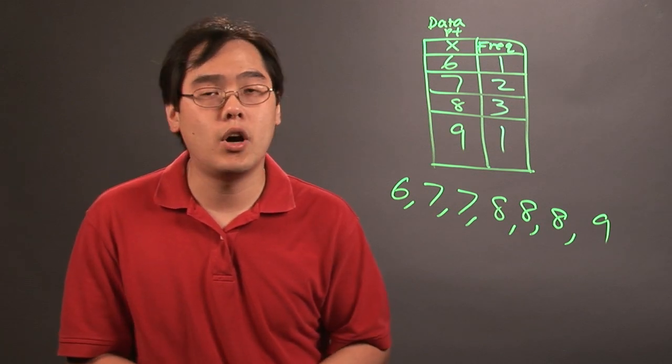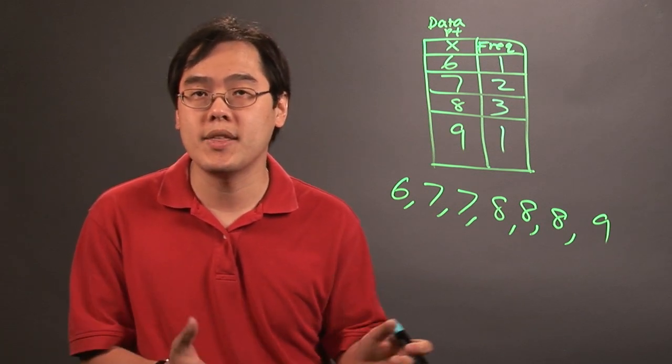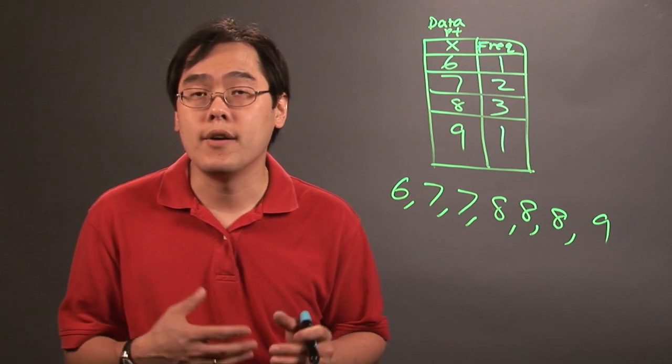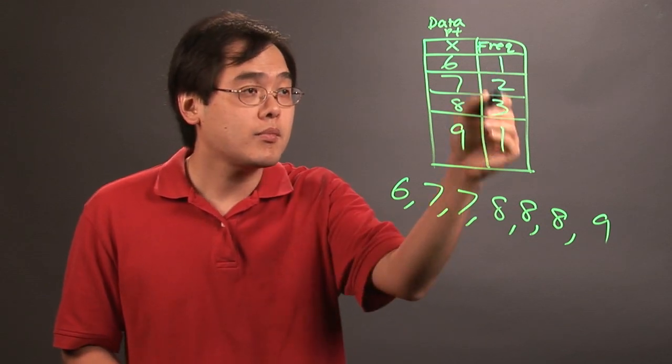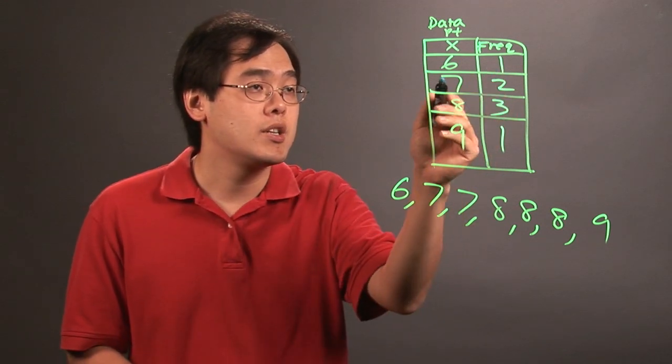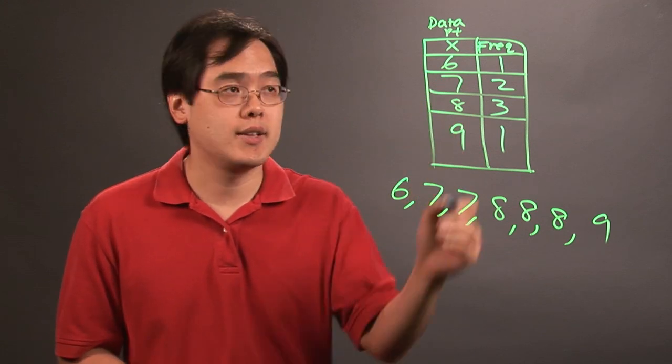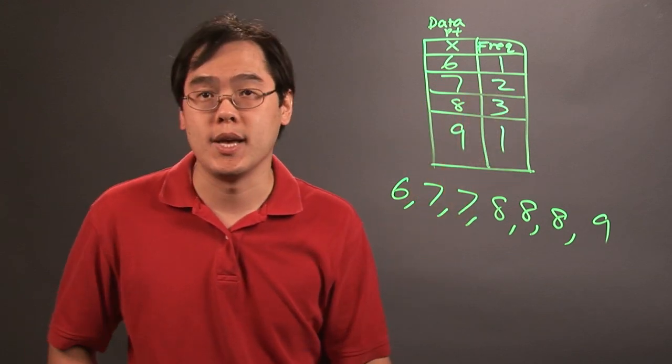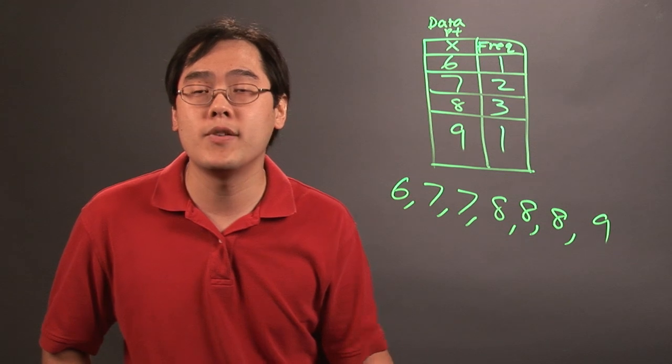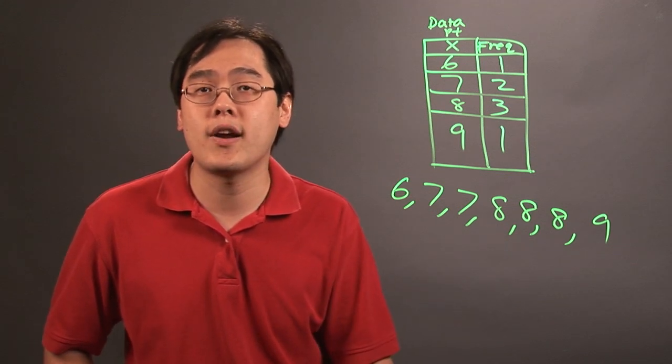So when it comes to figuring out a frequency table, all you need to do for the most part is to look at the data points that you have and then figure out how many of each that you see, and then that basically tells you how to read a frequency table. So I'm Jimmy Chang, and that's a brief demonstration on how to figure out a frequency table.